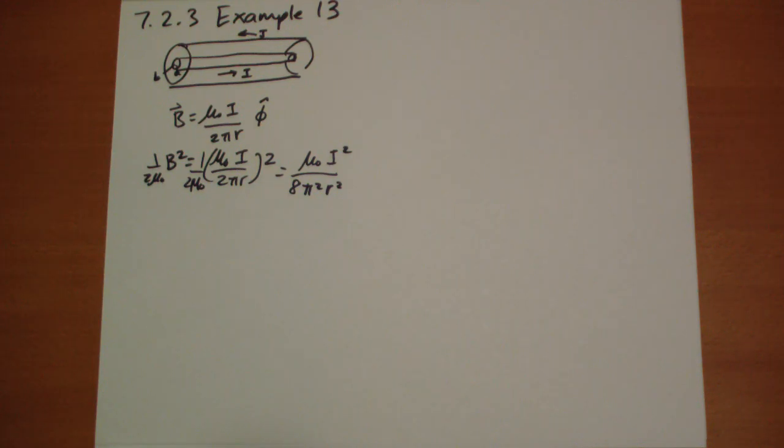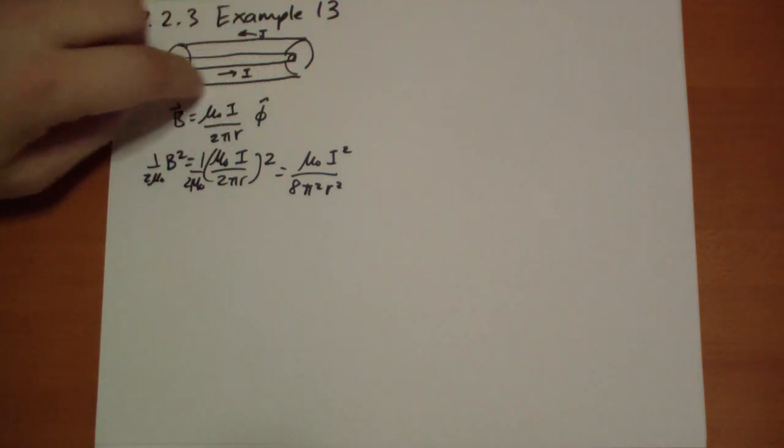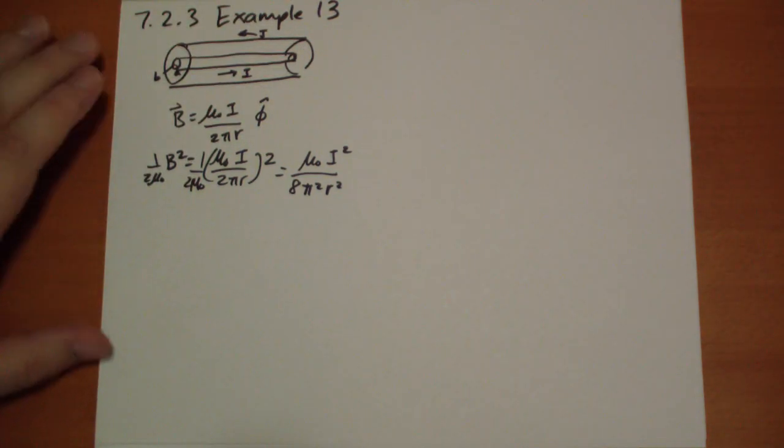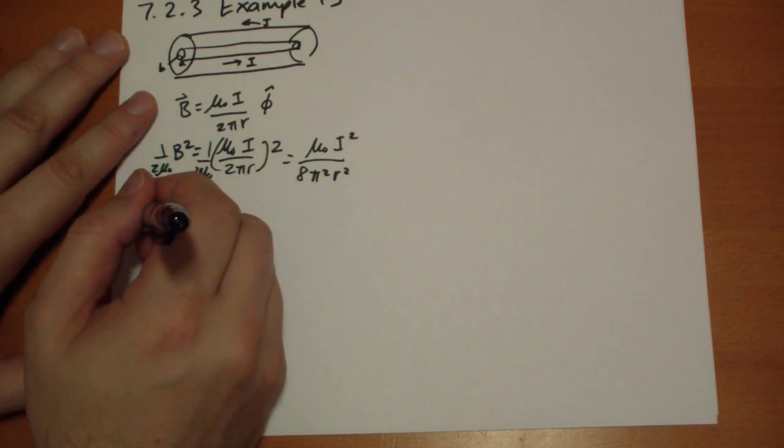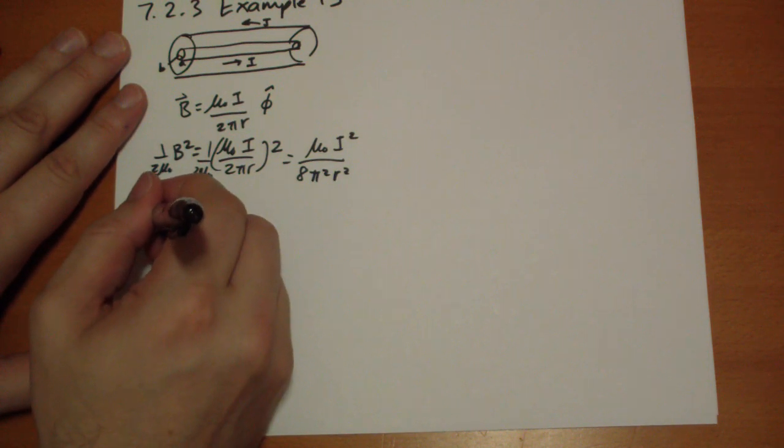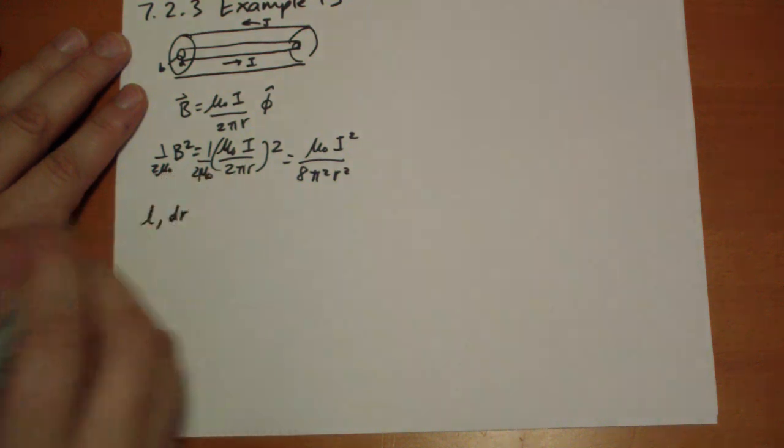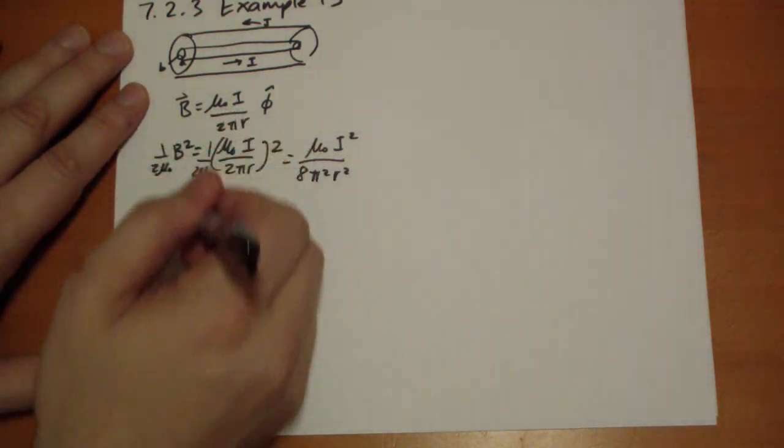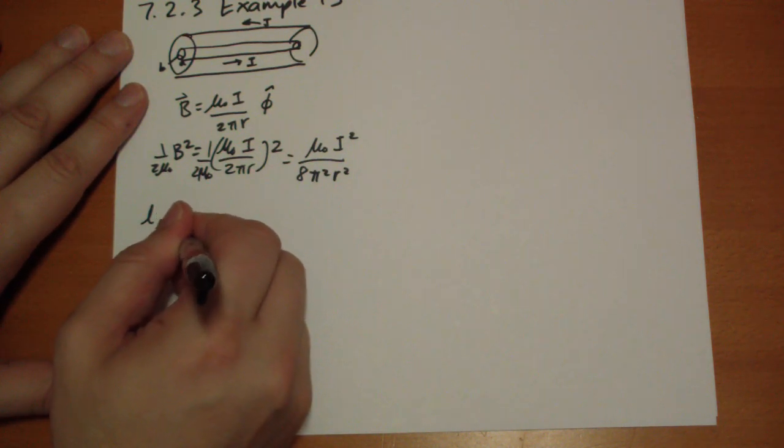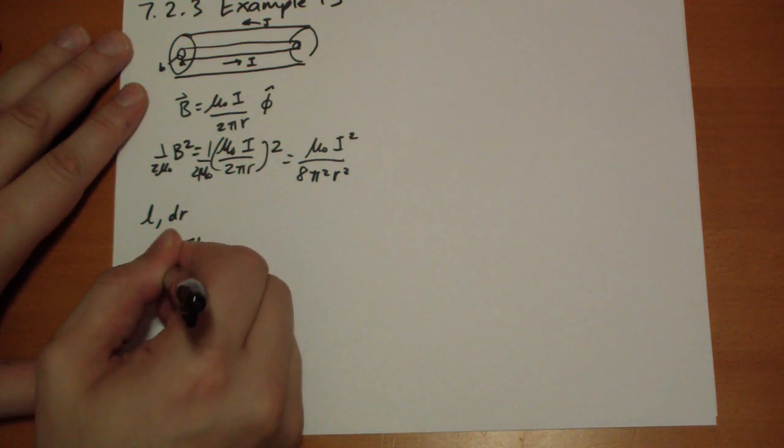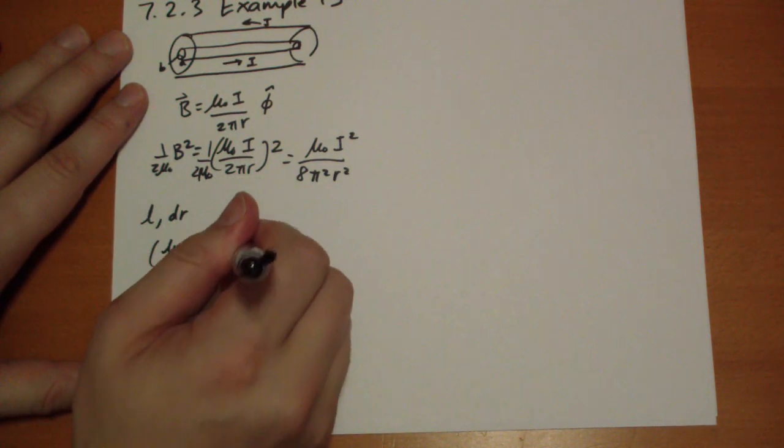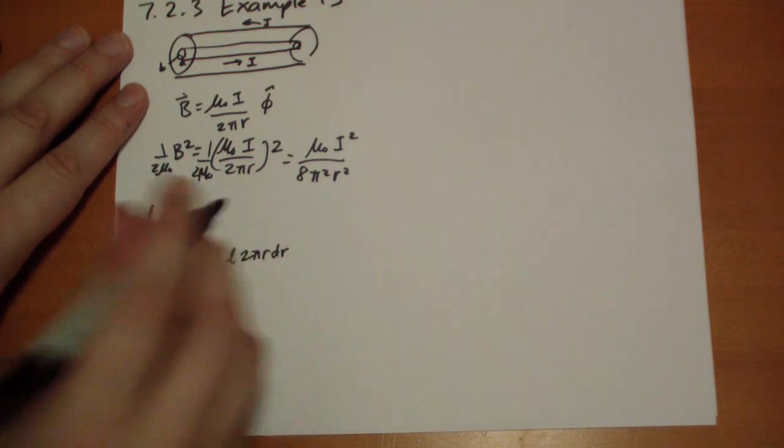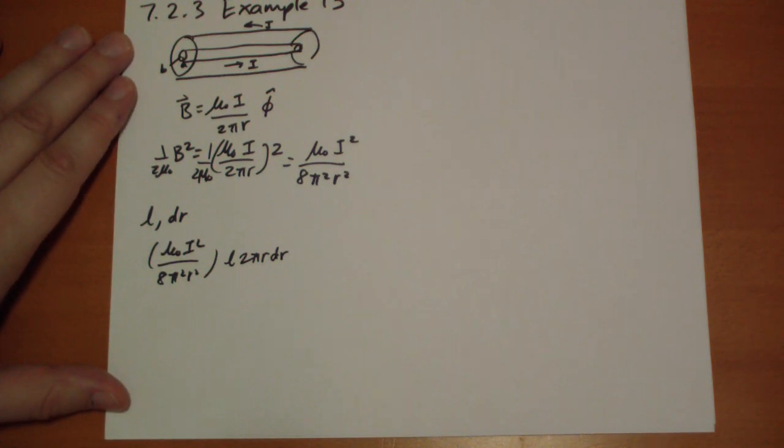So we're going to integrate. There's some horizontal symmetry going on here. So for a length L and a thickness dr. So we're going to get this energy density times the length L times 2 pi r dr.